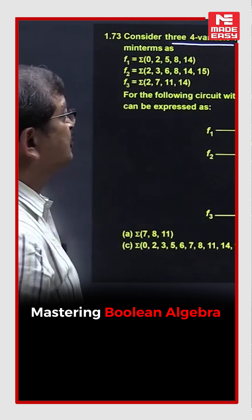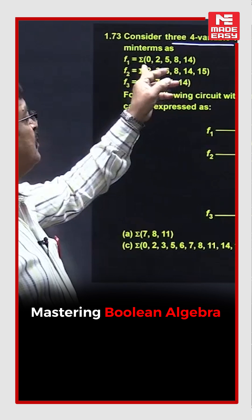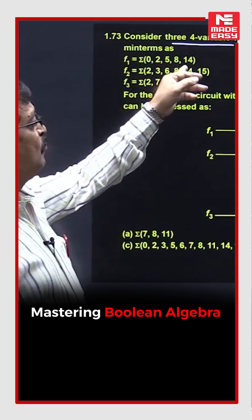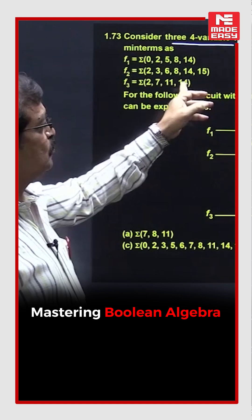On 4 variables. So f1's minterms are 0, 2, 5, 8 and 14. f2 has its minterms and f3 has its minterms.